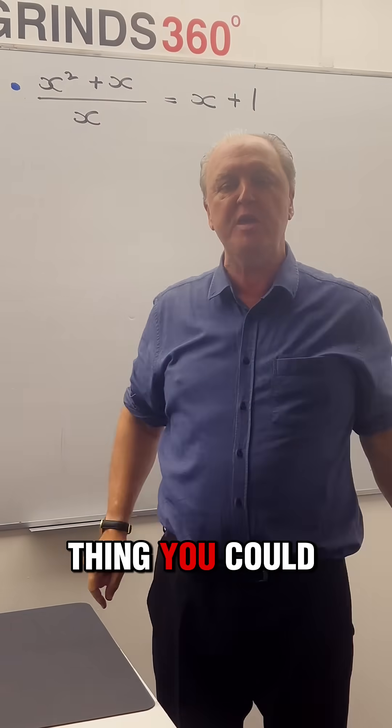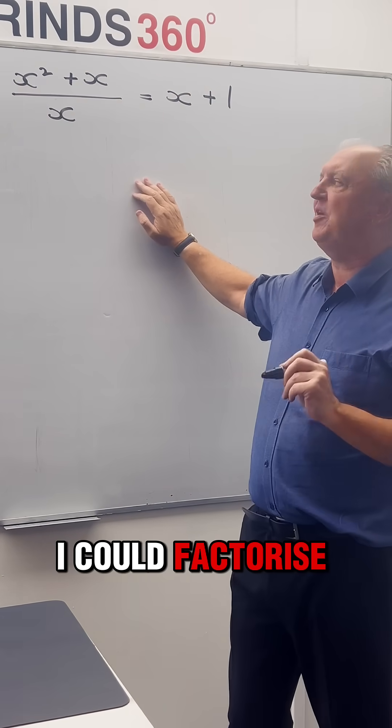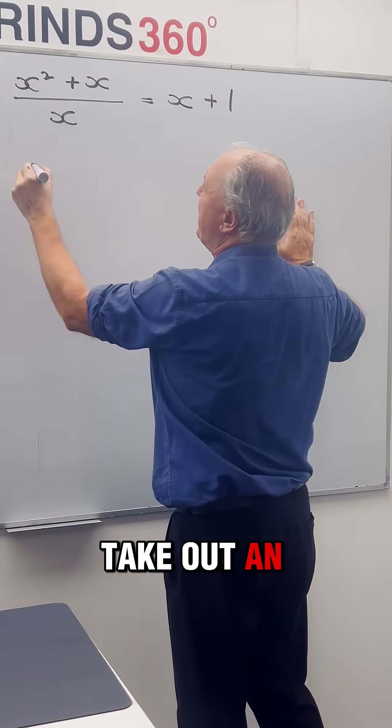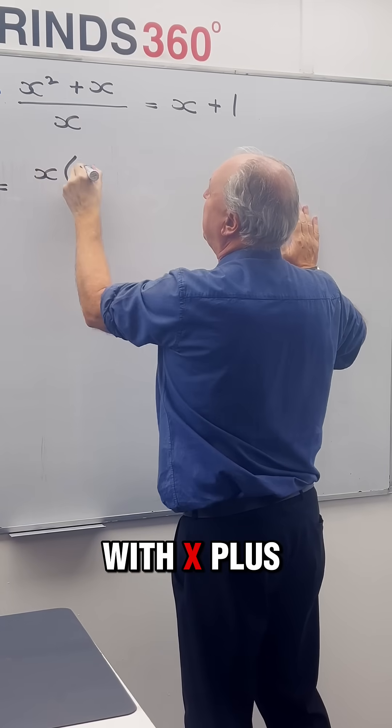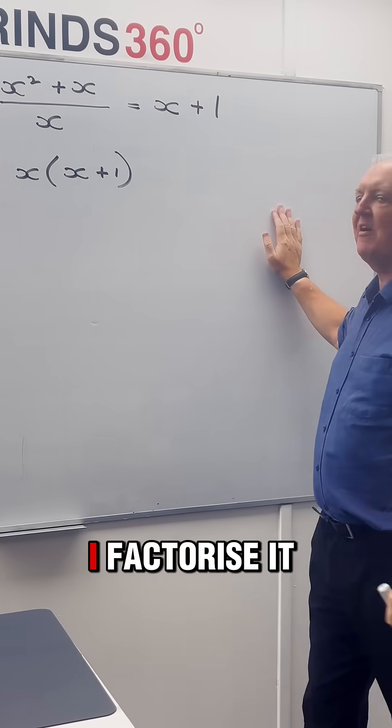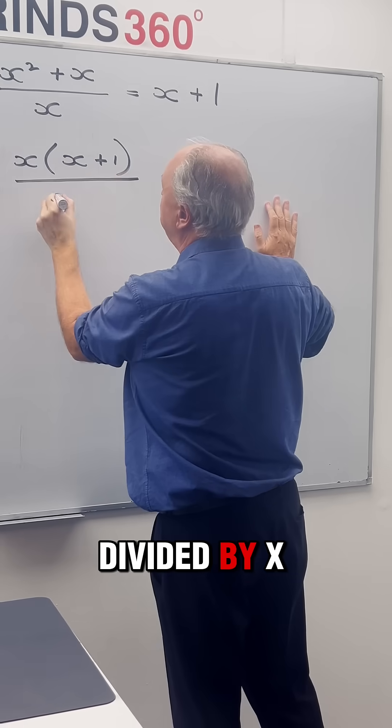There is another thing you could do. You see that top part there in the fraction? I could factorize it. I could take out an x in common. So I'm left with x plus 1 inside the bracket. So I factorize it by taking out the highest common factor divided by x.